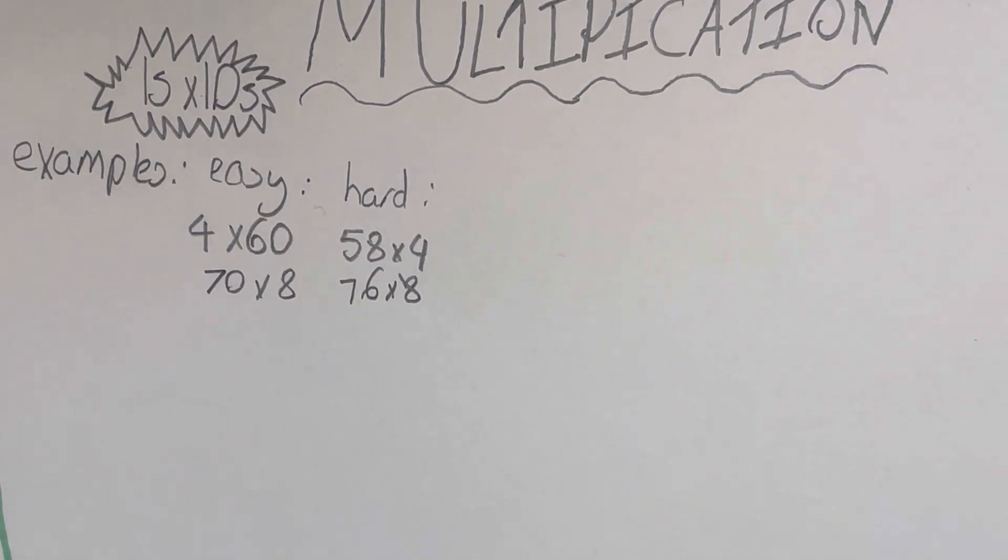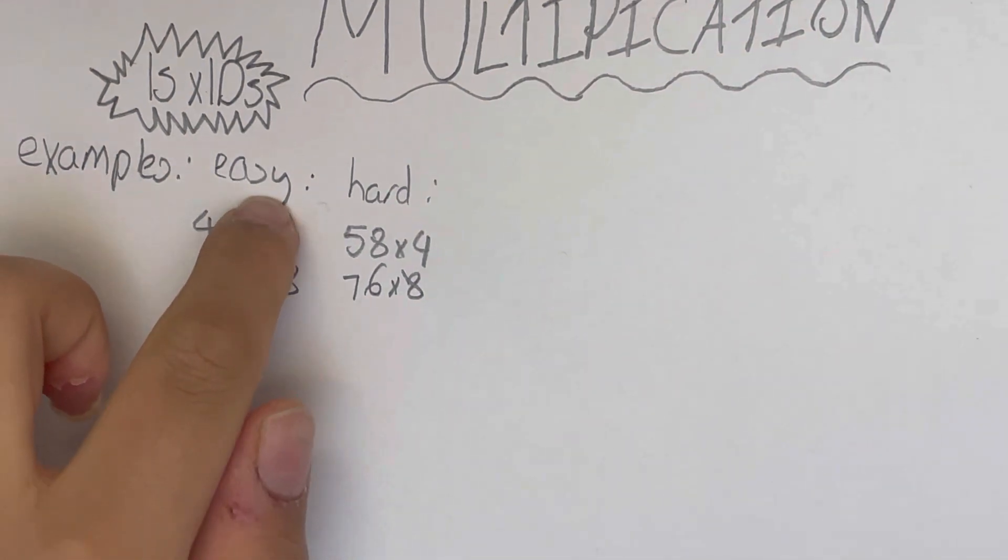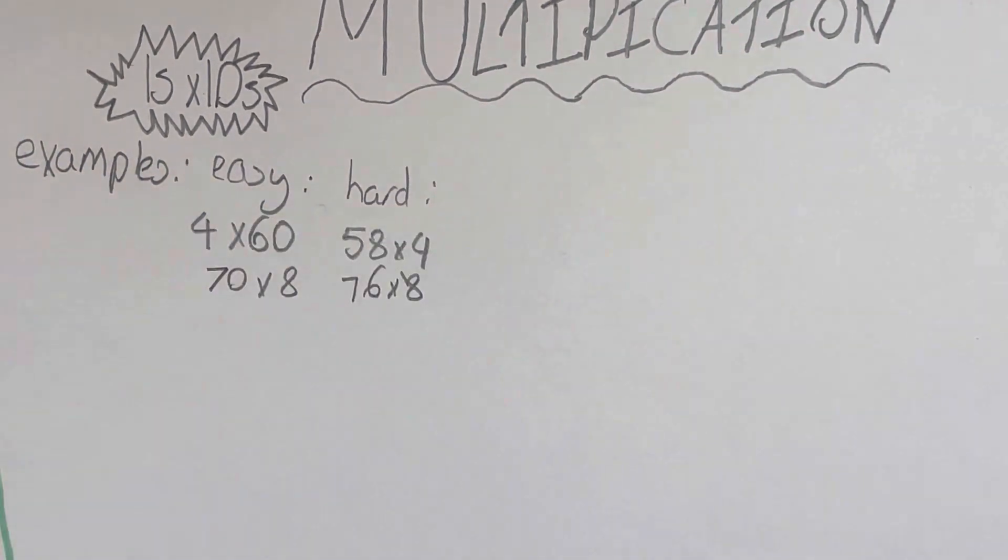Hello guys, welcome to my channel. Today we're going to be doing some multiplication, ones column by tens column. As you can see here, we've got some examples. We've got some easy ones, we've got some hard ones. We're going to be trying to conquer both of them.